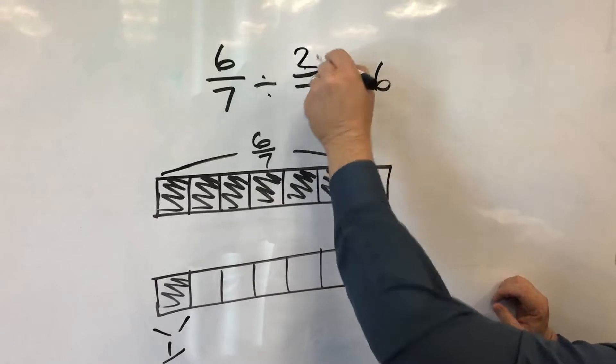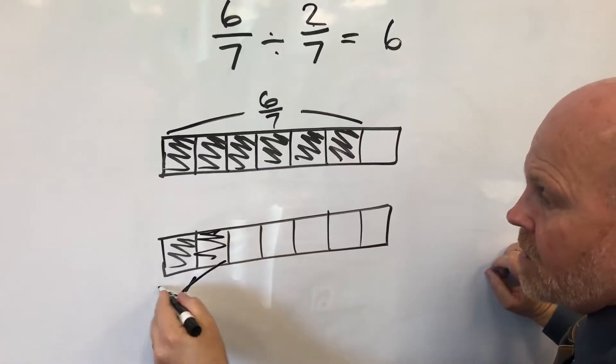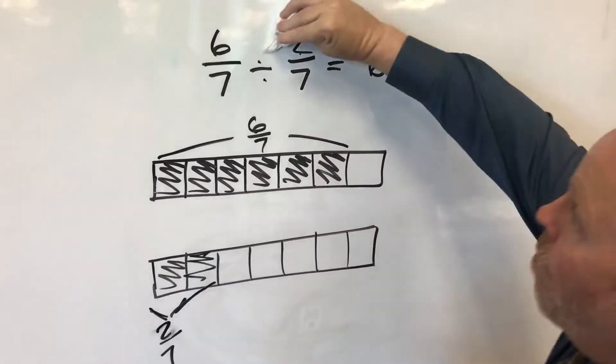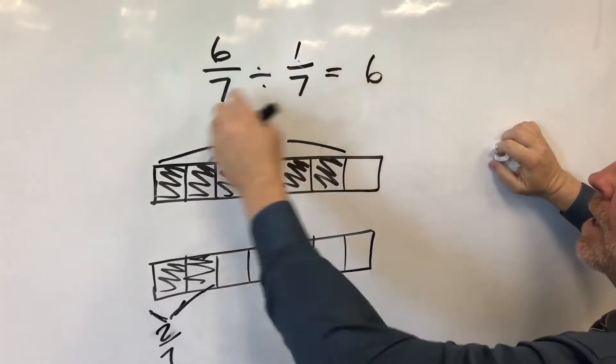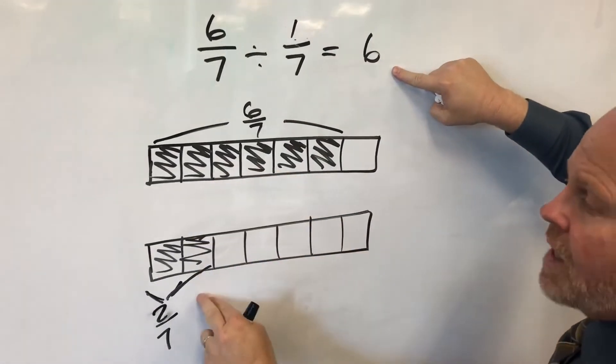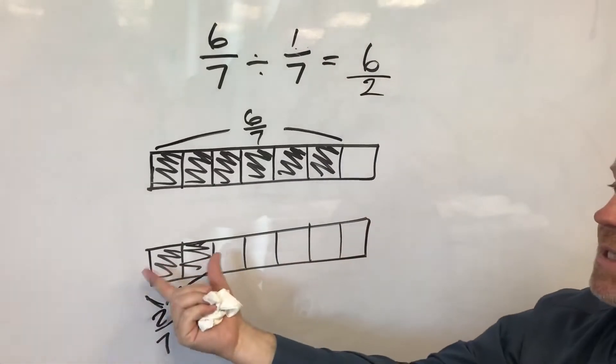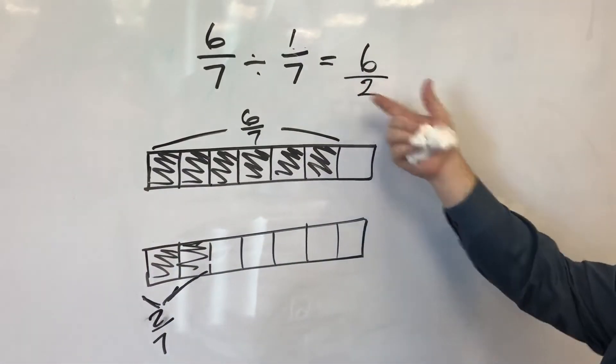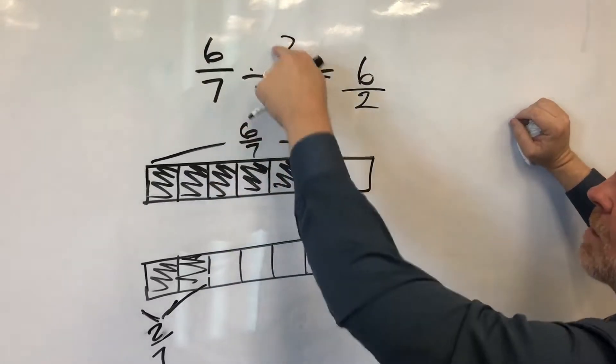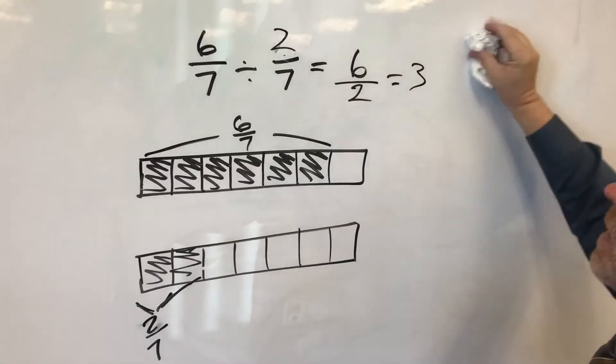So if we wanted to change that to two sevenths and we wanted to know how many two sevenths fits into that, well, we know that one seventh goes in six times. So therefore two sevenths, we have to divide by two because it's twice as big. So six sevenths divided by two sevenths is six divided by two, which is equal to three.